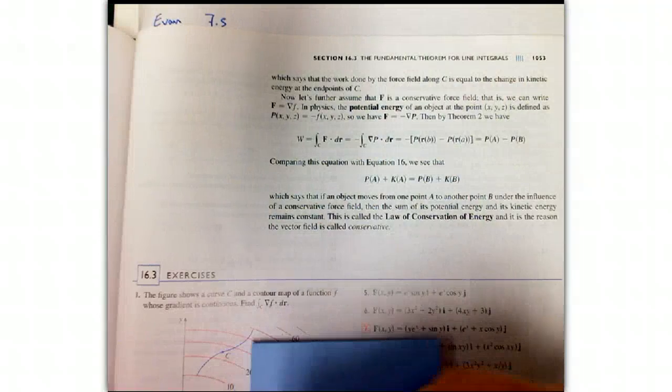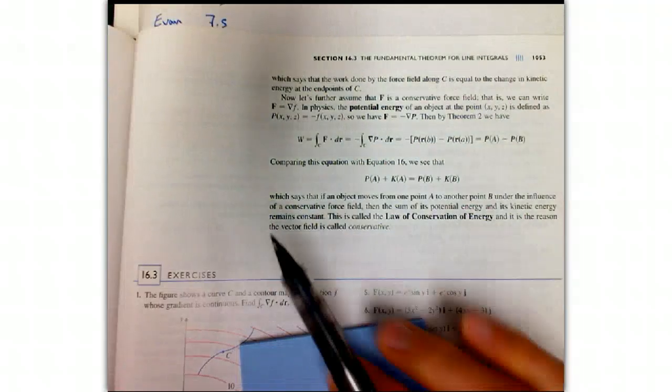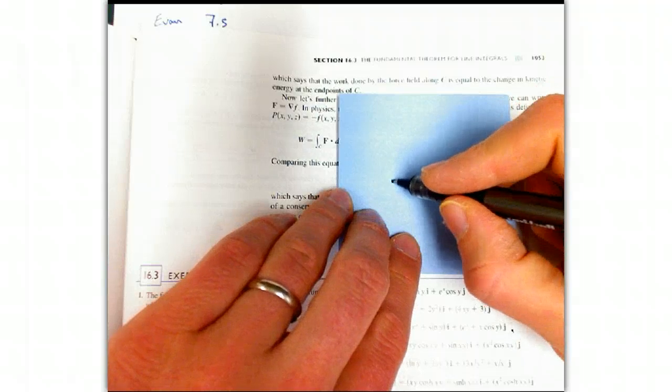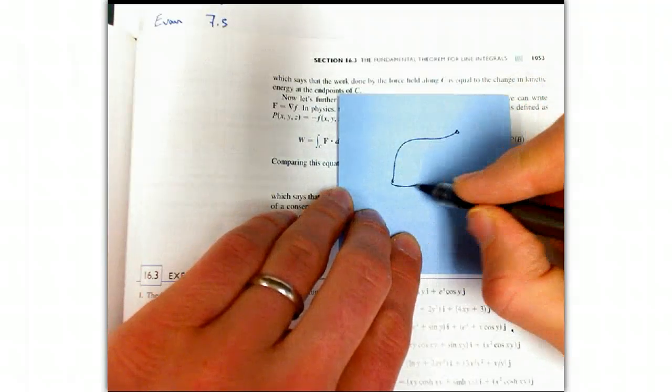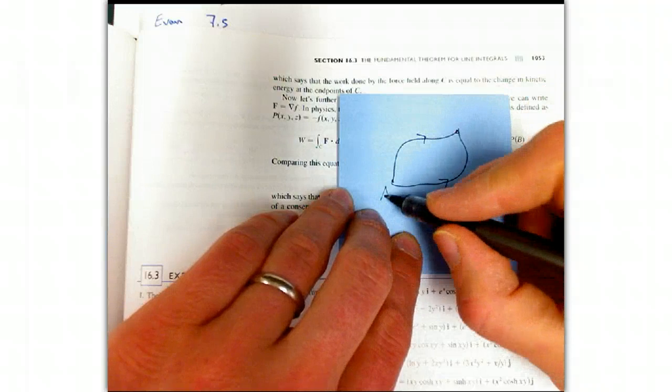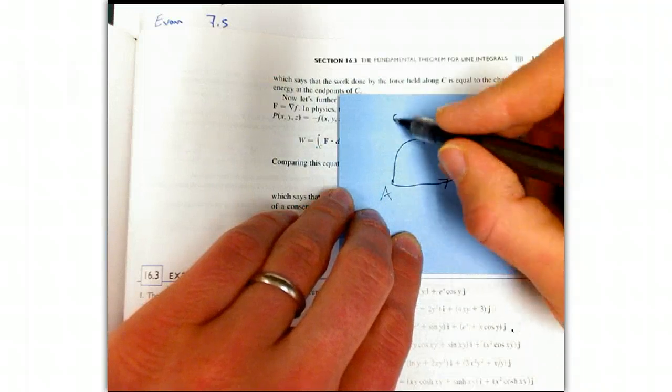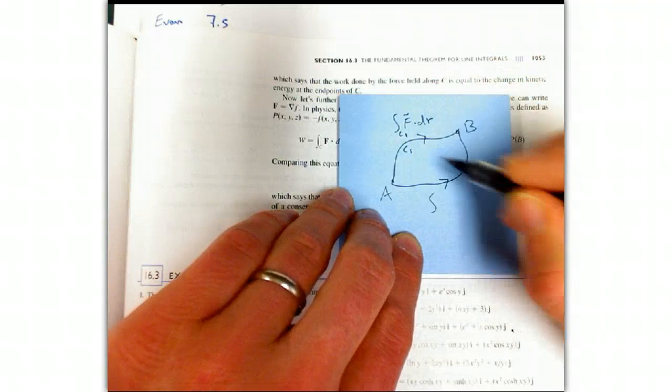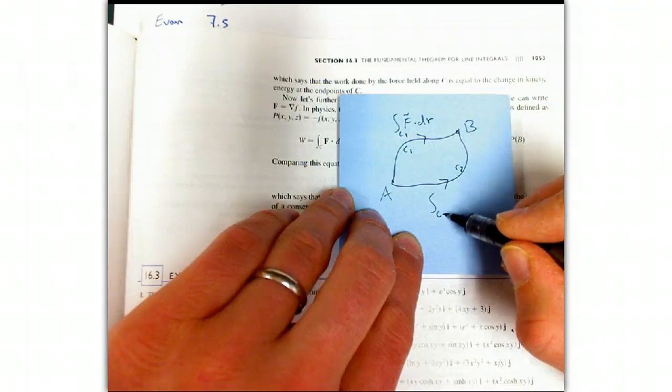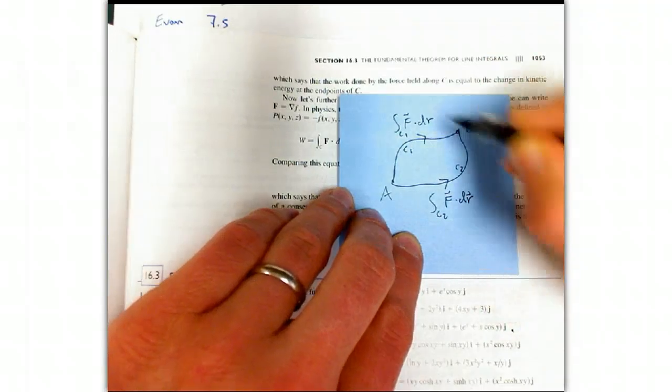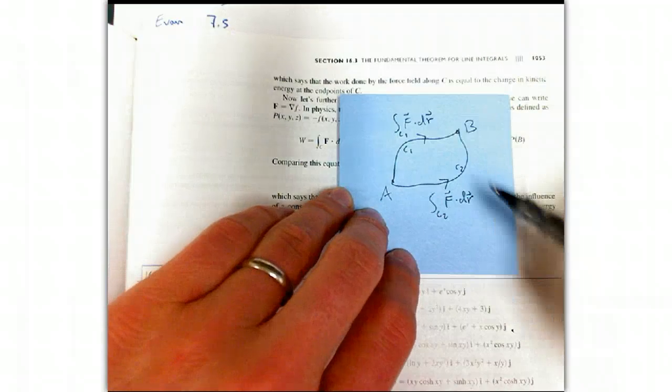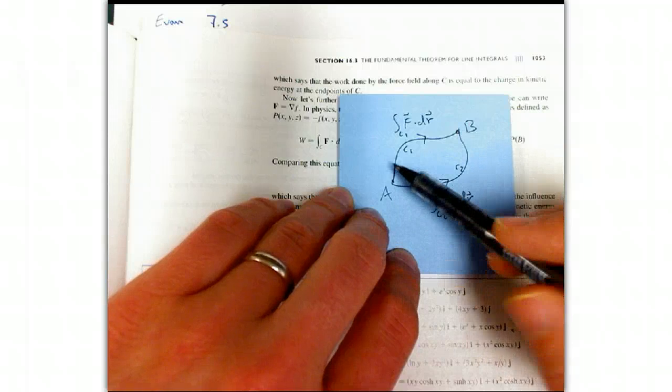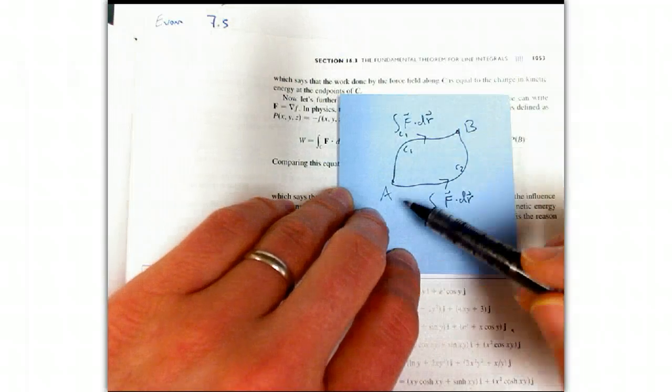If its integral is path independent, we know that we could take two different curves from a to b, and we know that the integral of f dot dr on c1 here, so that's curve c1, this is c2, is the same as the integral of f dot dr on c2. Well, that has the same feel, doesn't it? It doesn't depend on the details of the process. It just depends on the initial and final state.